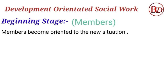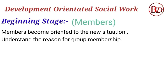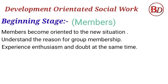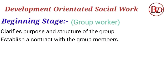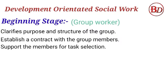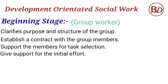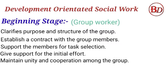Beginning stage: Members become oriented to the new group situation and understand the reason for group membership and the work to be done. Members experience feelings of enthusiasm but also have various doubts. The group worker clarifies the purpose and structure of the group, establishes a contract with group members, supports members for task selection, provides support for initial efforts, and maintains unity and cooperation among the group.